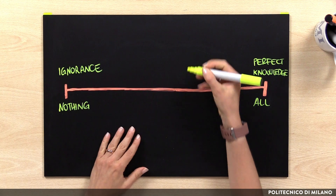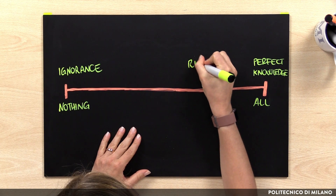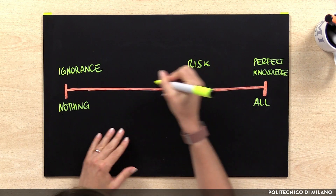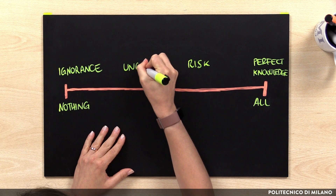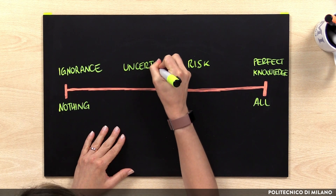In the middle between perfect rationality and ignorance we have two intermediate situations, called risk and uncertainty.